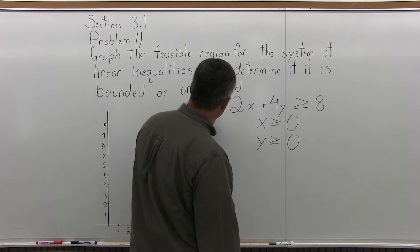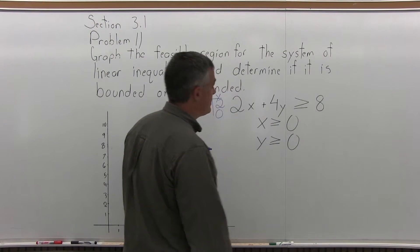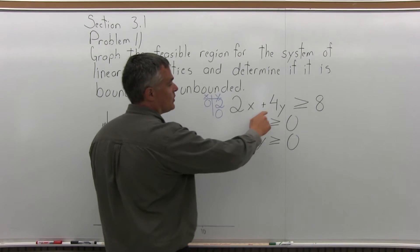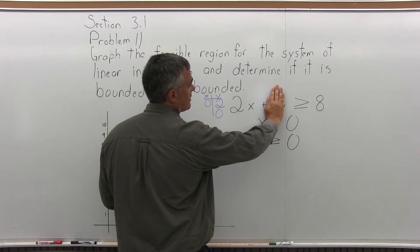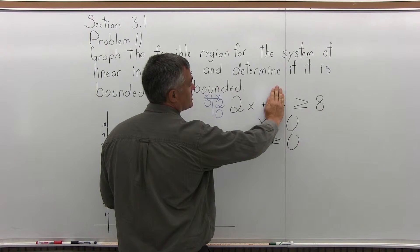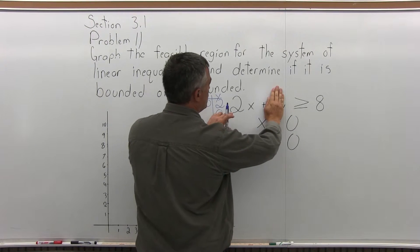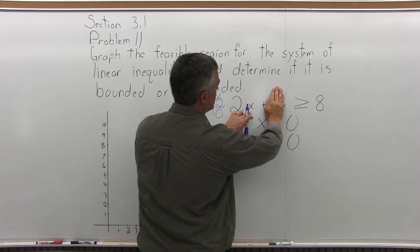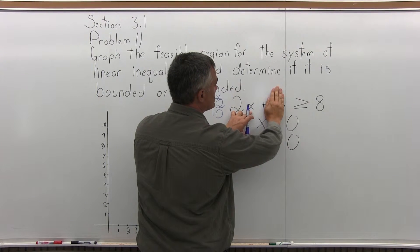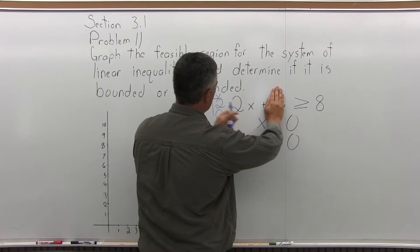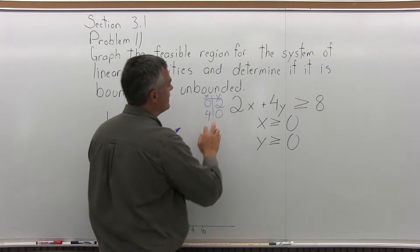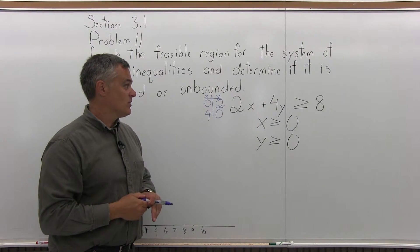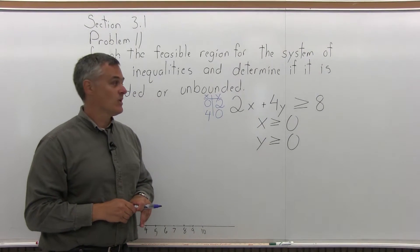For a second point, I'm going to now let y equals 0 and see what x would have to be. If y is 0, the 4 times y becomes 4 times 0 and drops out, and I have 2x equals 8. Again, I'm pretending it's an equals. X would have to be 4. 2 times 4 would make 8 equals 8.